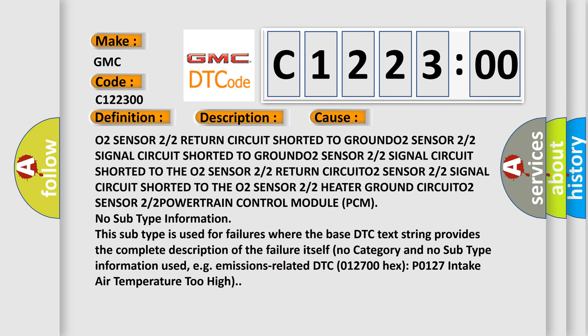This diagnostic error occurs most often in these cases: O2 sensor 2/2 return circuit shorted to ground, O2 sensor 2/2 signal circuit shorted to ground or voltage, O2 sensor 2/2 heater ground circuit, O2 sensor 2/2 powertrain control module PCM. No subtype information - this subtype is used for failures where the base DTC text string provides the complete description of the failure itself, with no category and no subtype information used.